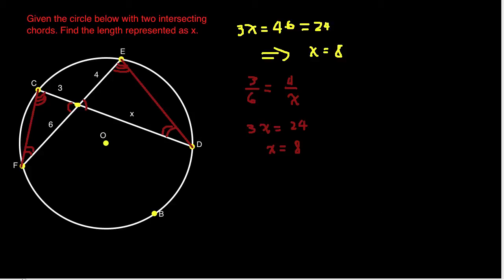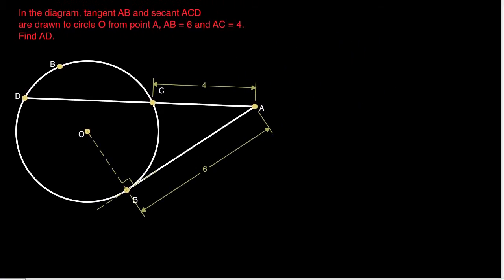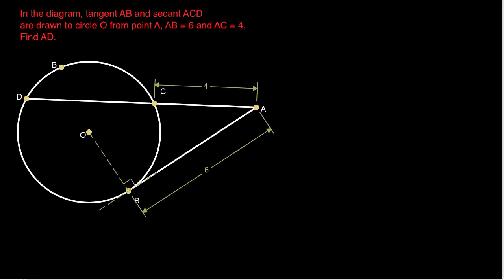One more problem to look at. We have a circle with a secant and a tangent. Here's the center of the circle and the radius. We're given that this length is four and this length is six, and we're asked to find the full length AD.